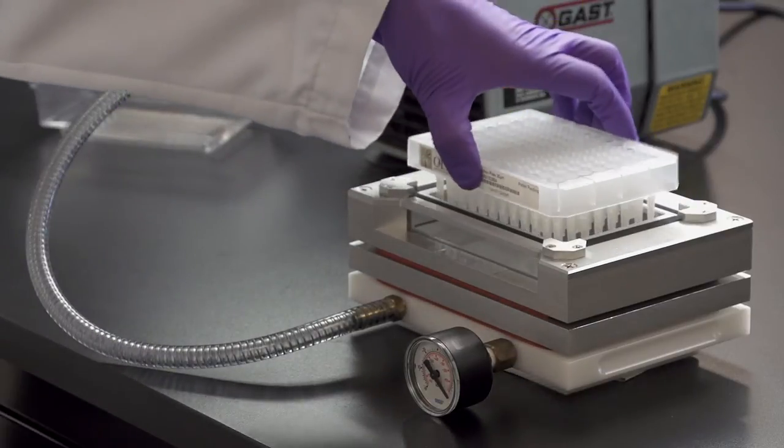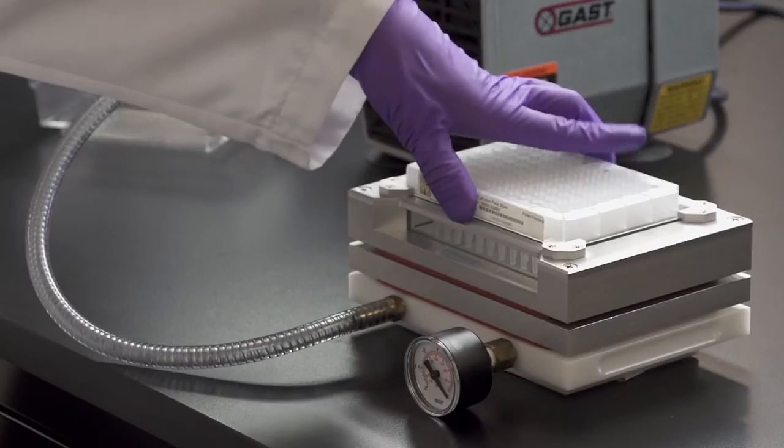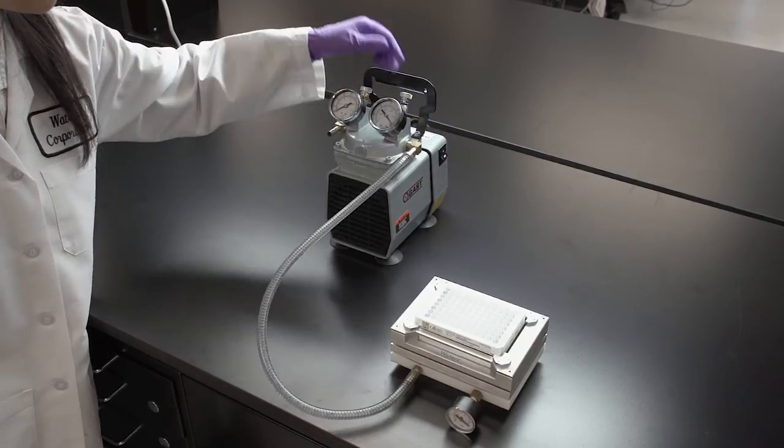Place the plate on the top of the manifold, ensuring good seal on the gasket. Set regulated vacuum source to zero.